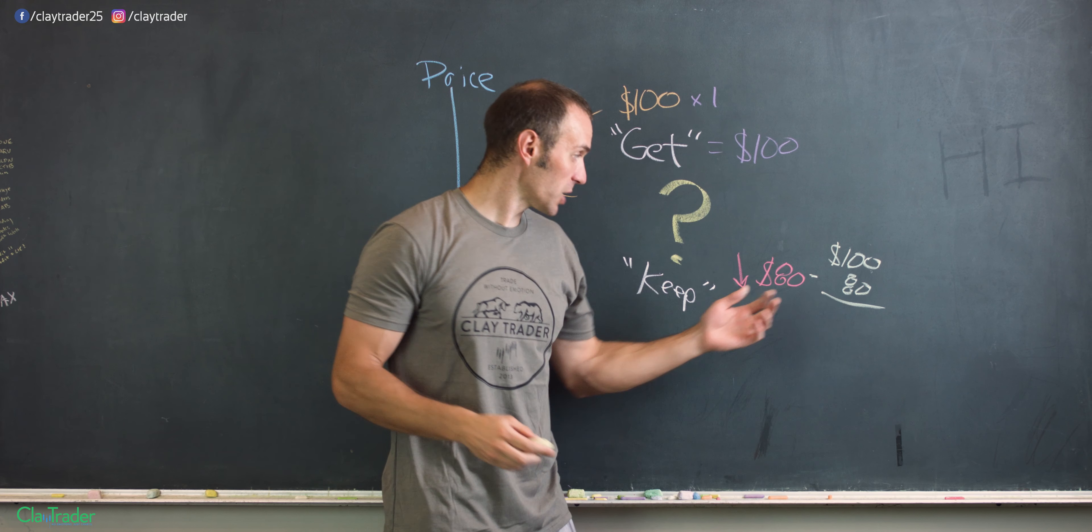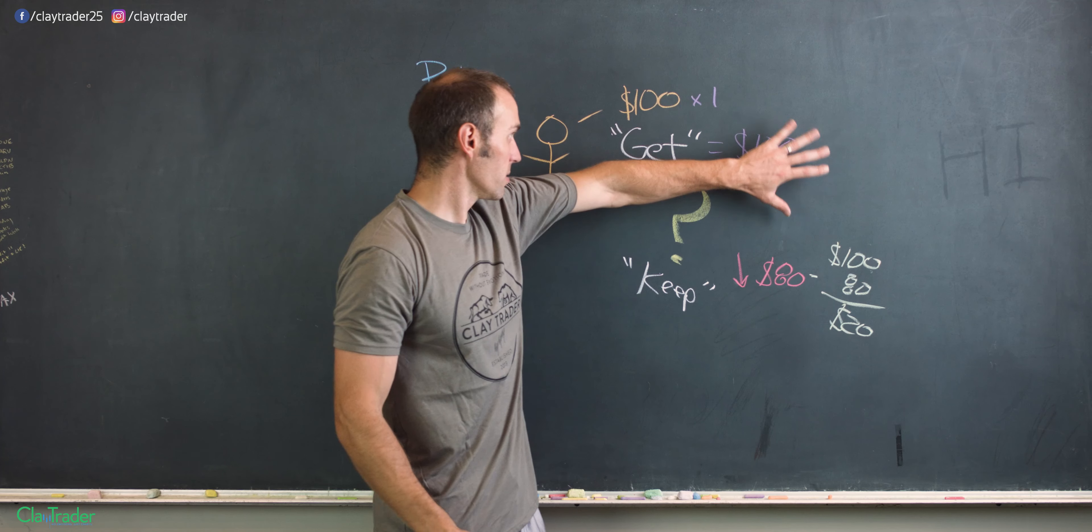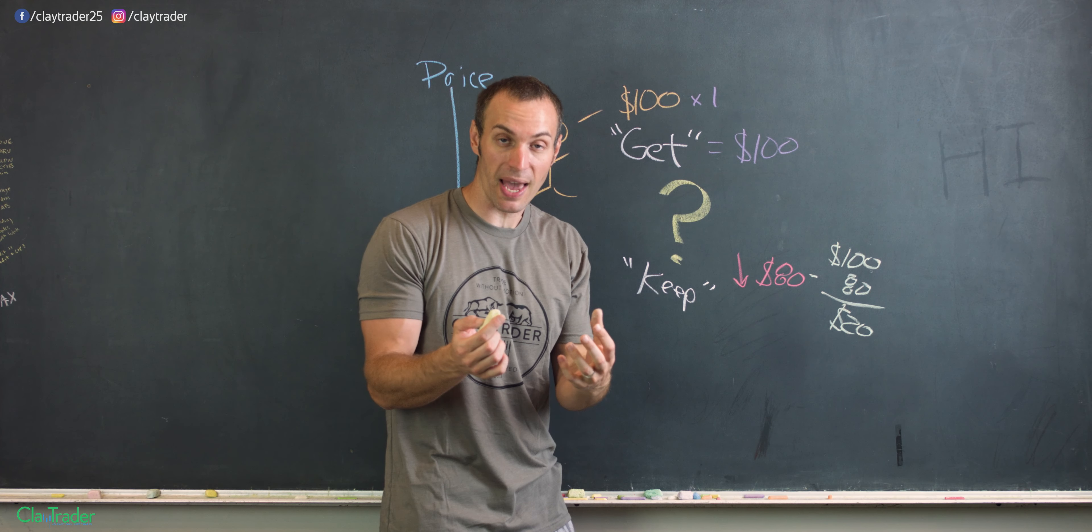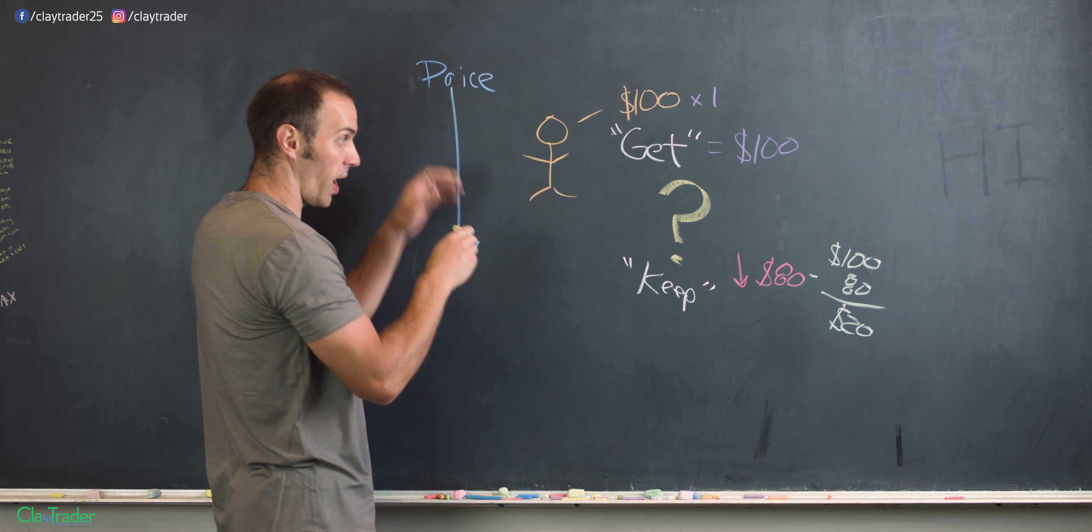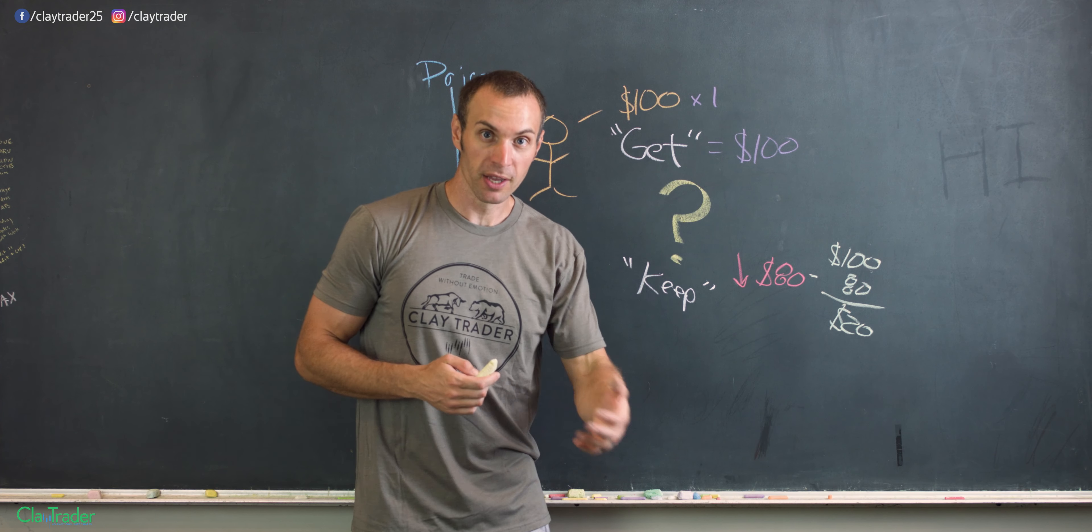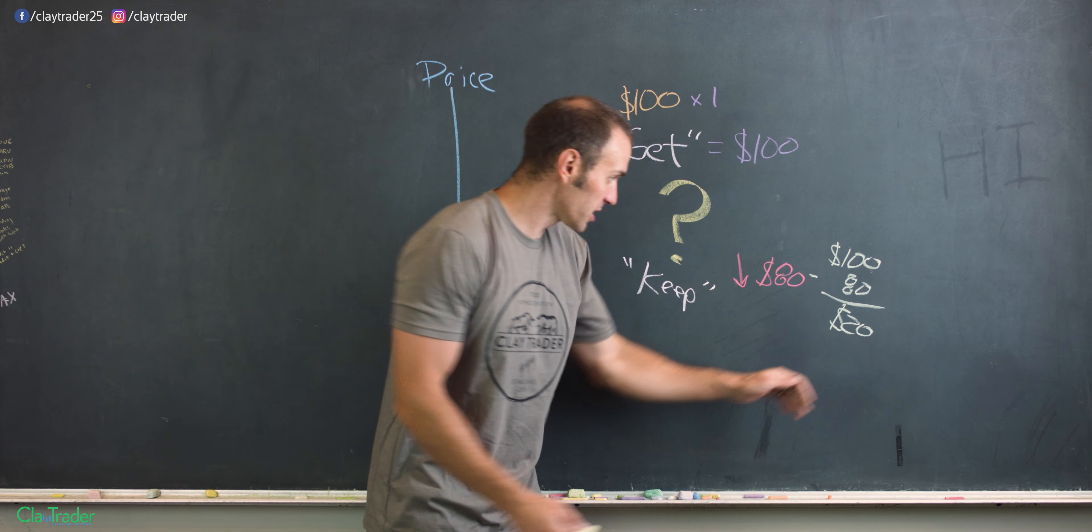What does that leave him with? Well, John just made $20, right? He got $100 for selling. He was able to go out there and buy the stock back for a lesser price, hence why we want to see this, right? You want to see prices going down. When they go down, then you get to go out there and buy it cheaper. And when you get to buy it cheaper, guess what? You get to keep money, and that is the profit.